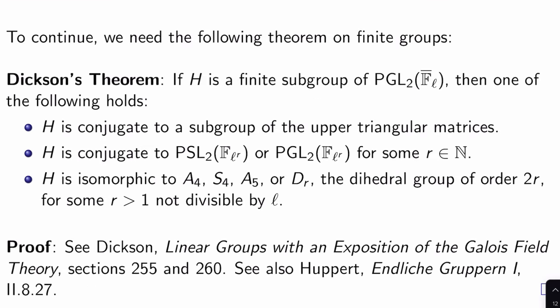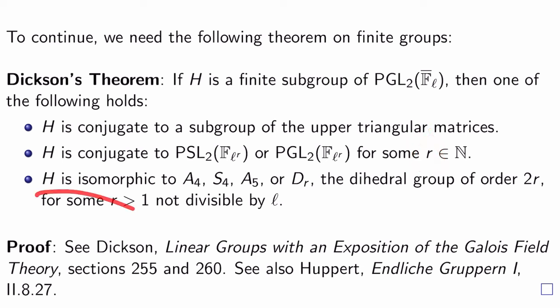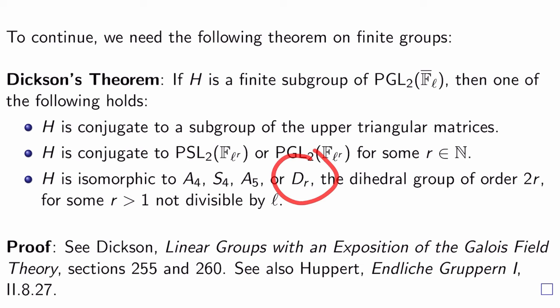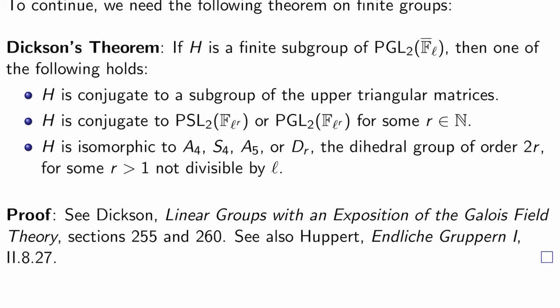To continue, we need Dixon's theorem on finite groups: if H is a finite subgroup of PGL_2(F_l-bar), then one of the following holds — H is conjugate to a subgroup of the upper triangular matrices; H is conjugate to PSL_2(F_{l^r}) or PGL_2(F_{l^r}) for some natural number r; or H is isomorphic to A_4, S_4, A_5, or D_r (the dihedral group of order 2r for some r not divisible by l with r > 1). This is proven in Dixon's 'Linear Groups with an Exposition of the Galois Field Theory,' sections 255 and 260.